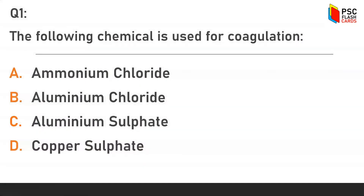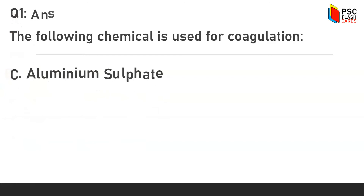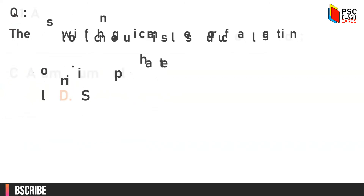Question number one: the following chemical is used for coagulation. Option A: ammonium chloride. Option B: aluminium chloride. Option C: aluminium sulfate. Option D: copper sulfate. The answer is option C, aluminium sulfate.